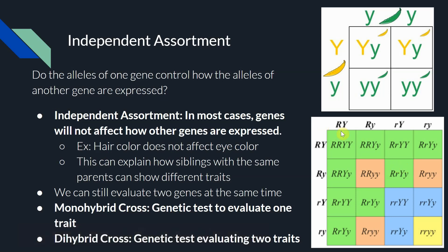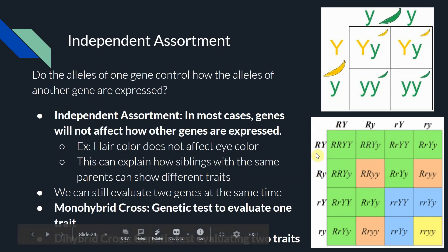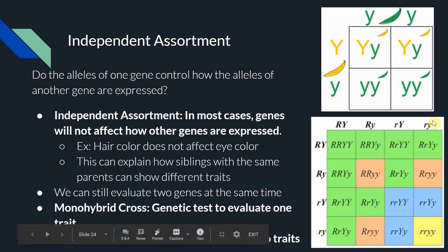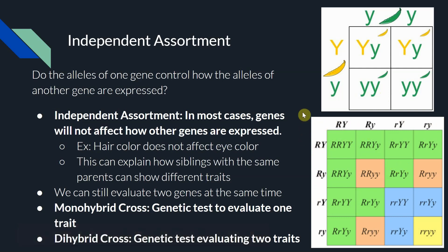At the very end of the last video, I mentioned that while the distribution process of a dihybrid cross is very similar to a monohybrid cross, coming up with what's supposed to go on the outside of our dihybrid cross is going to be a little bit more tricky. So we're going to dive into that today — how do we come up with these letters on the outside?